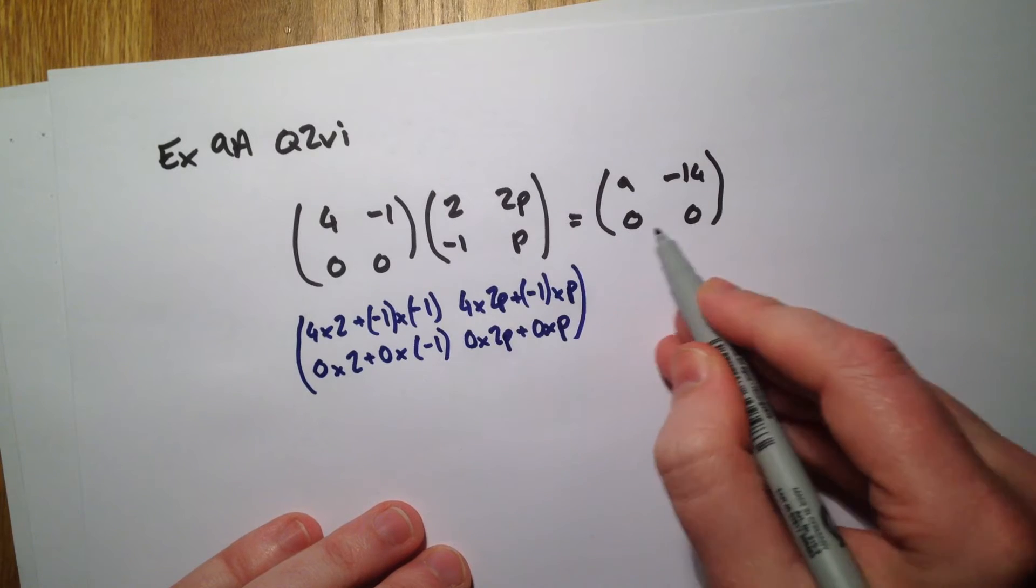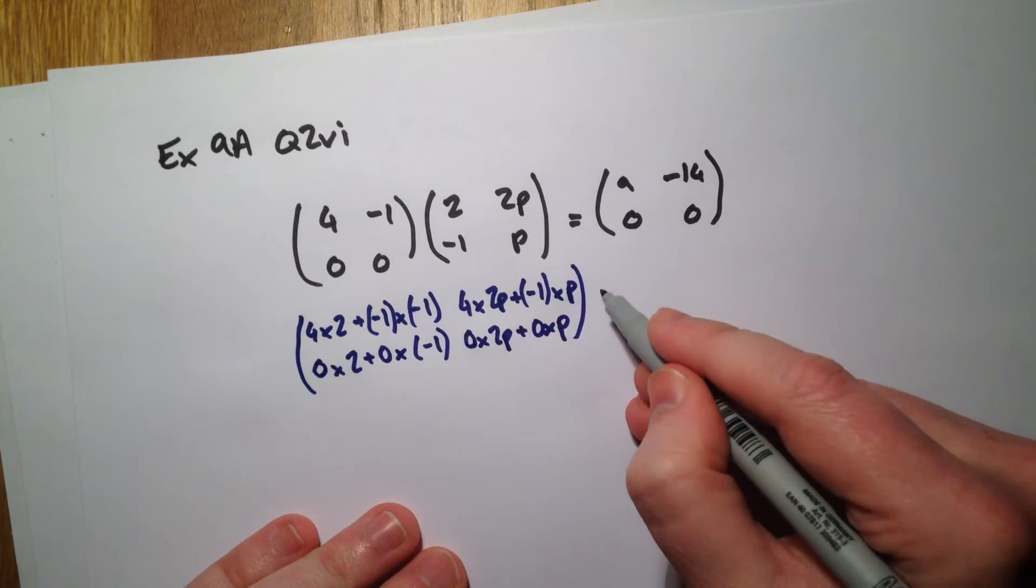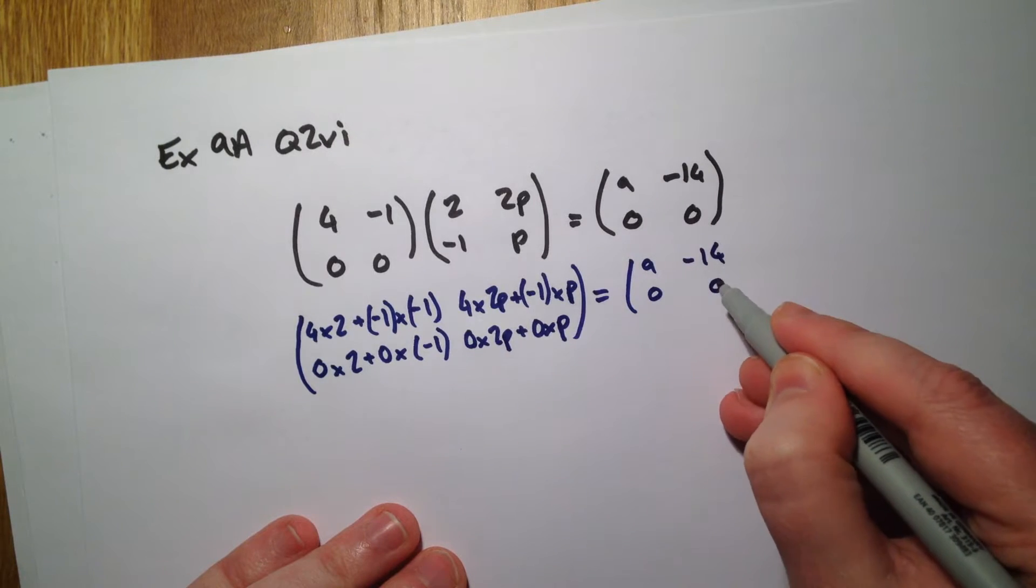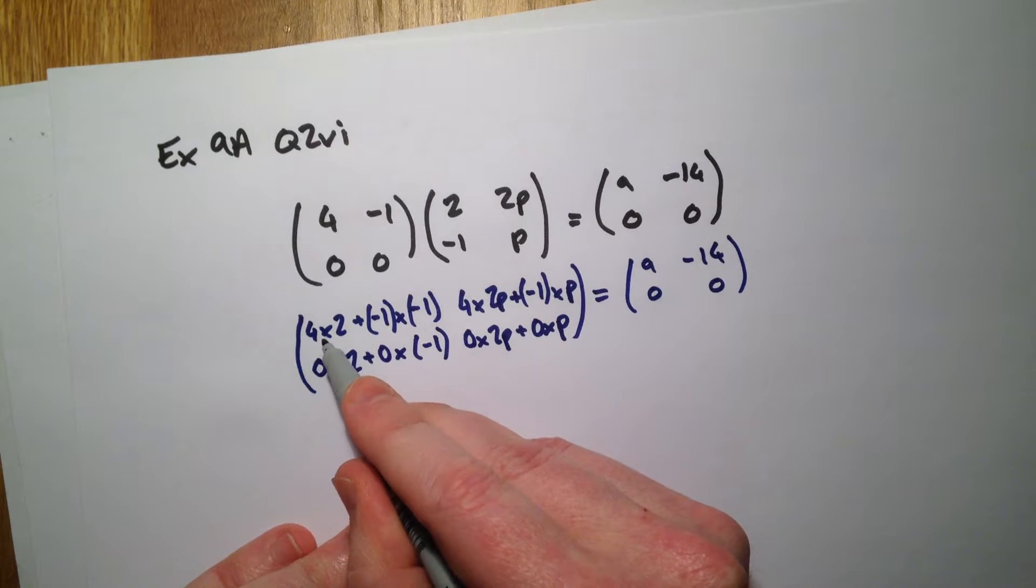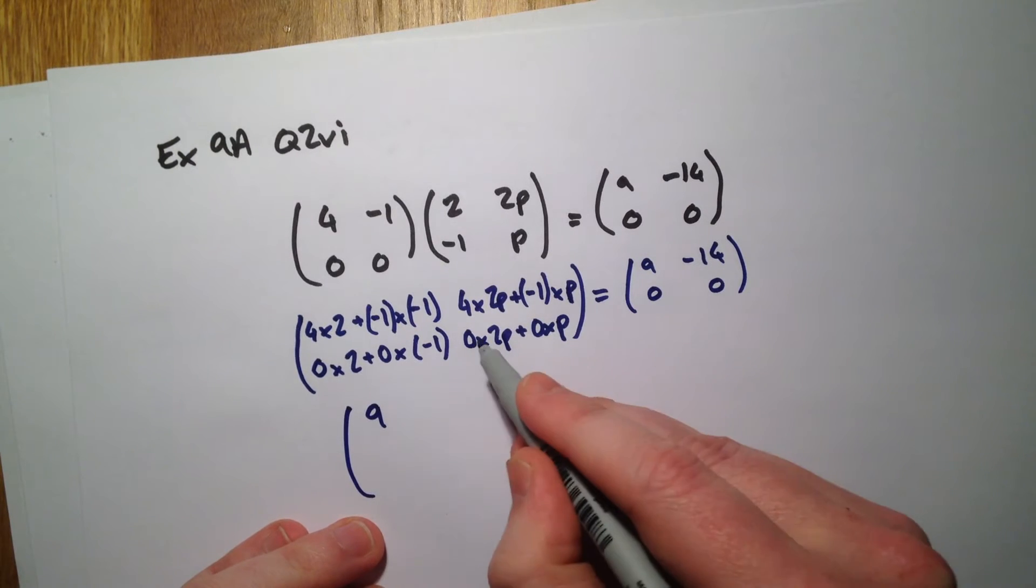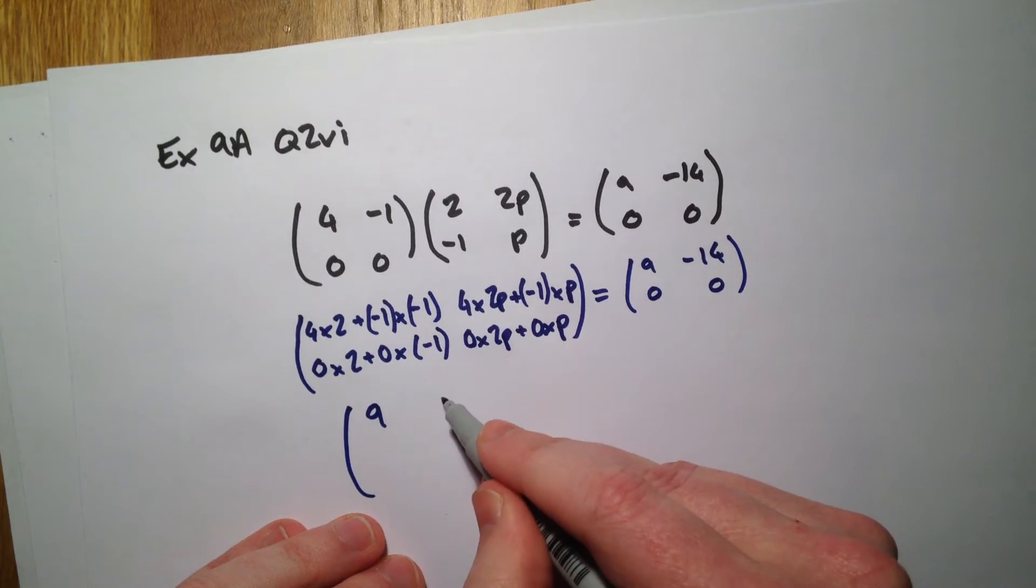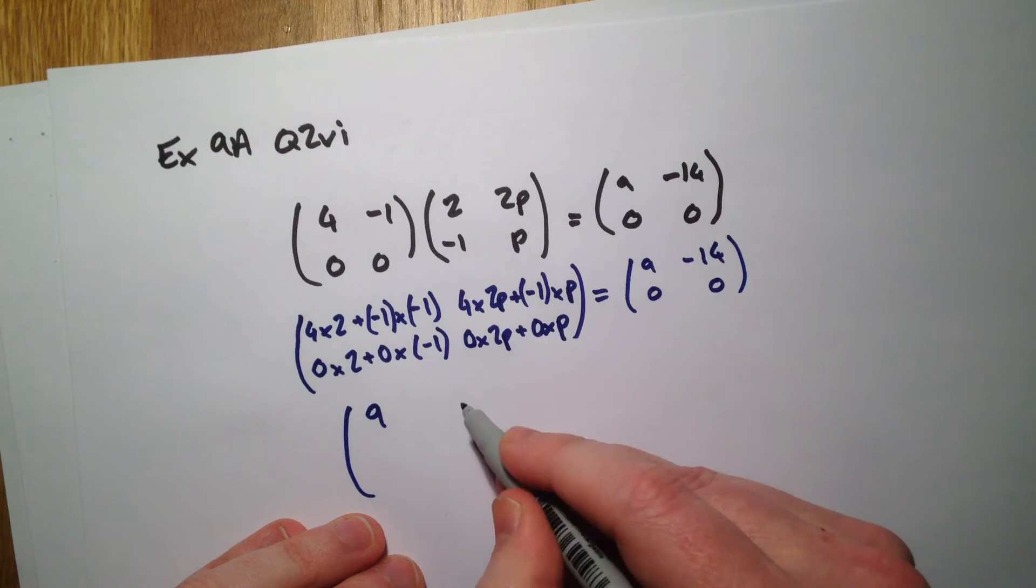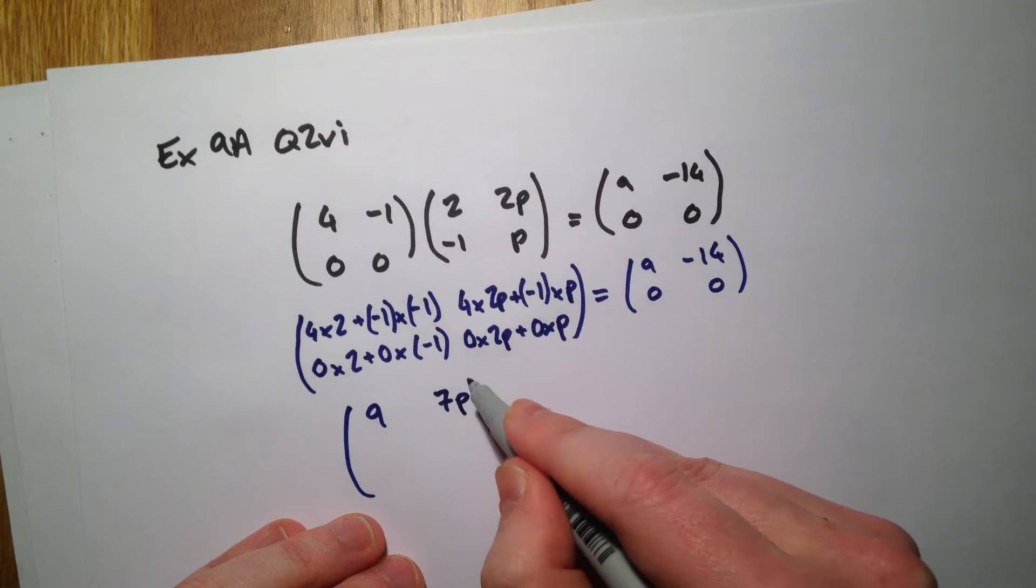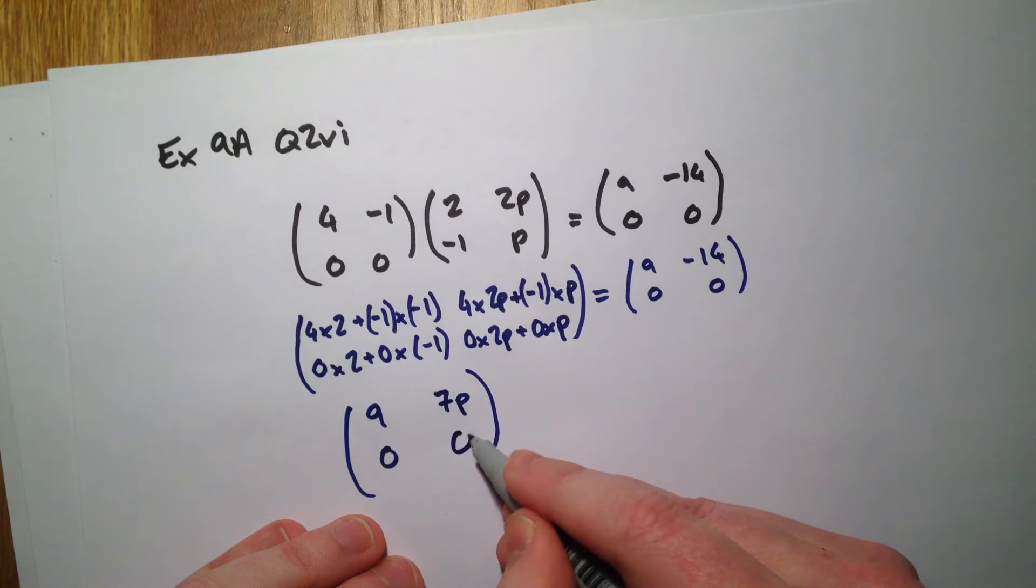And we know this is going to come to 0, 0, so there's not really much point is there. Right, so this is 8 plus 1, that's 9. This is 8p plus negative 1p, so that's 7p. That's 0, 0.